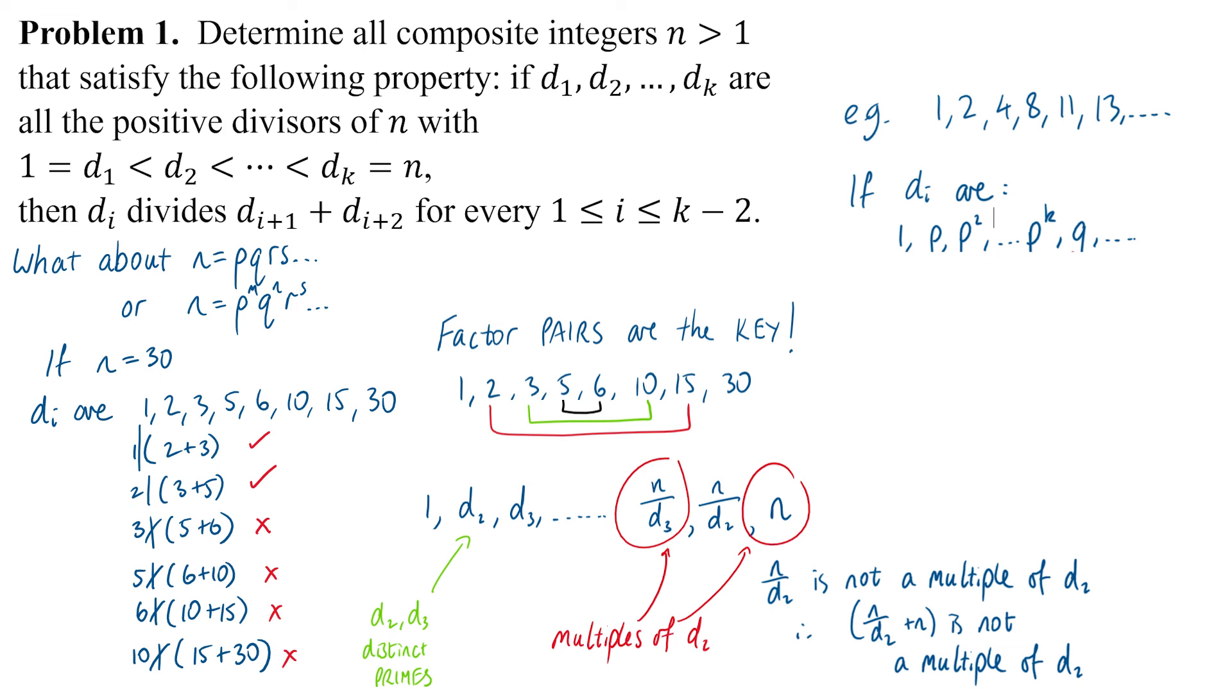We can see that is going to fail because pᵏ + q is not going to be a multiple of pᵏ⁻¹ because q is prime. So we've ruled out all other composite numbers except for those powers of primes.